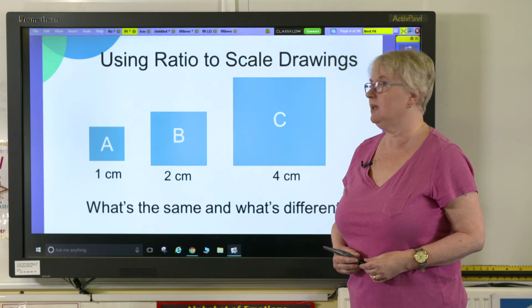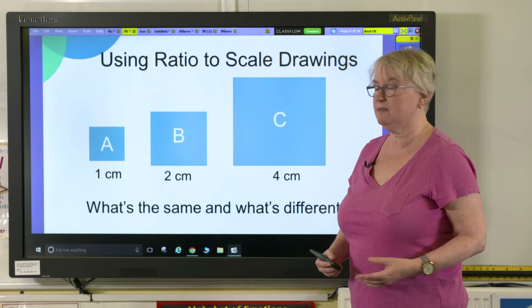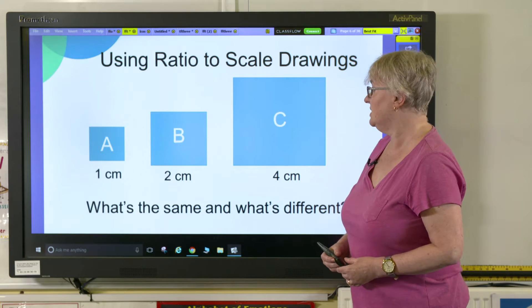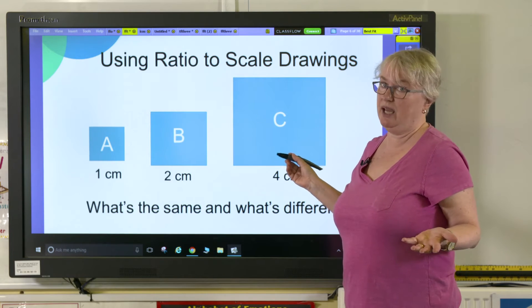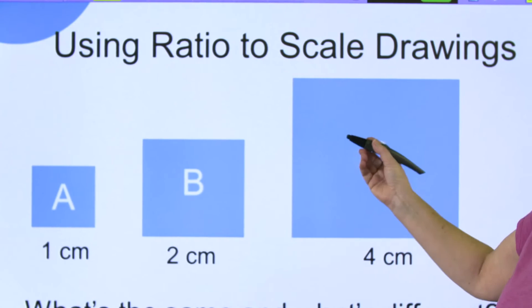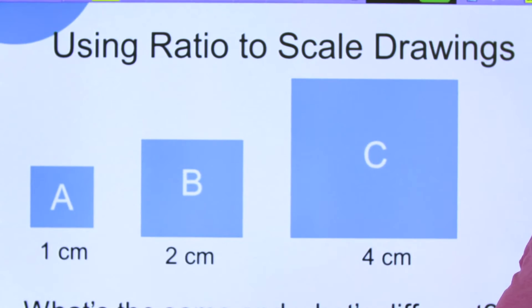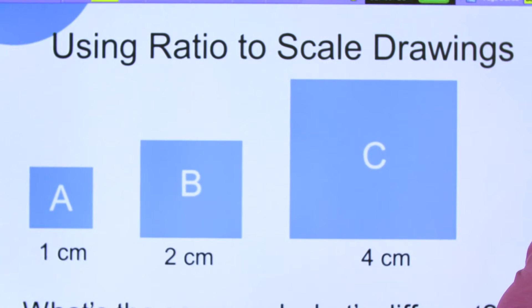I'm hoping that they're going to see that these three shapes, they are all squares and you can see that looking at them. They might point out the fact that they're the same colour, but you can see that shape A is half the size of shape B and shape B is half the size of shape C.